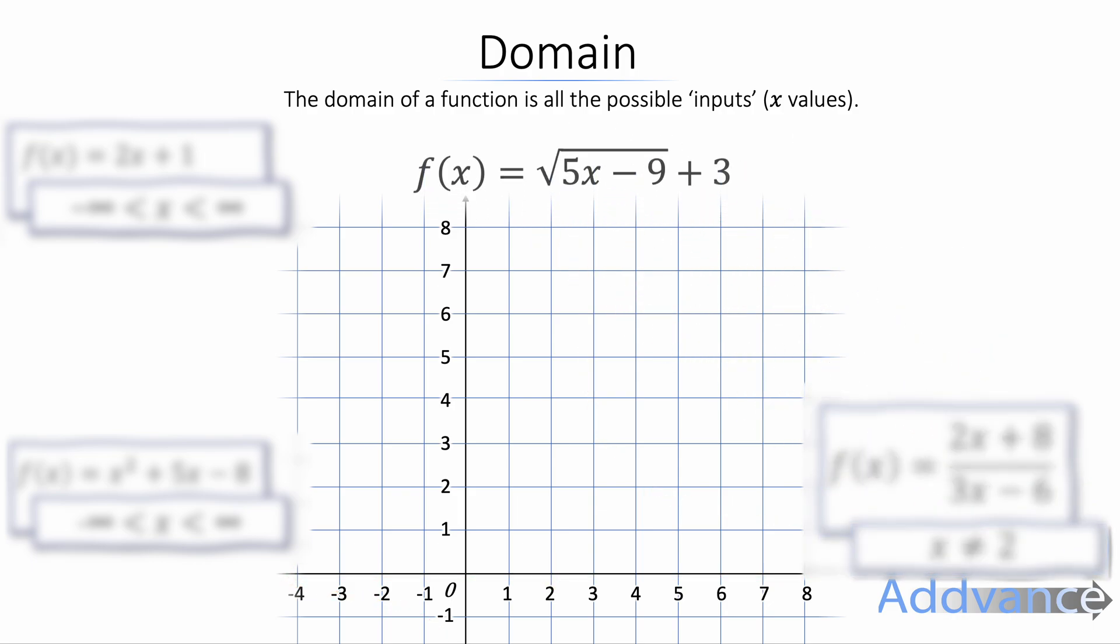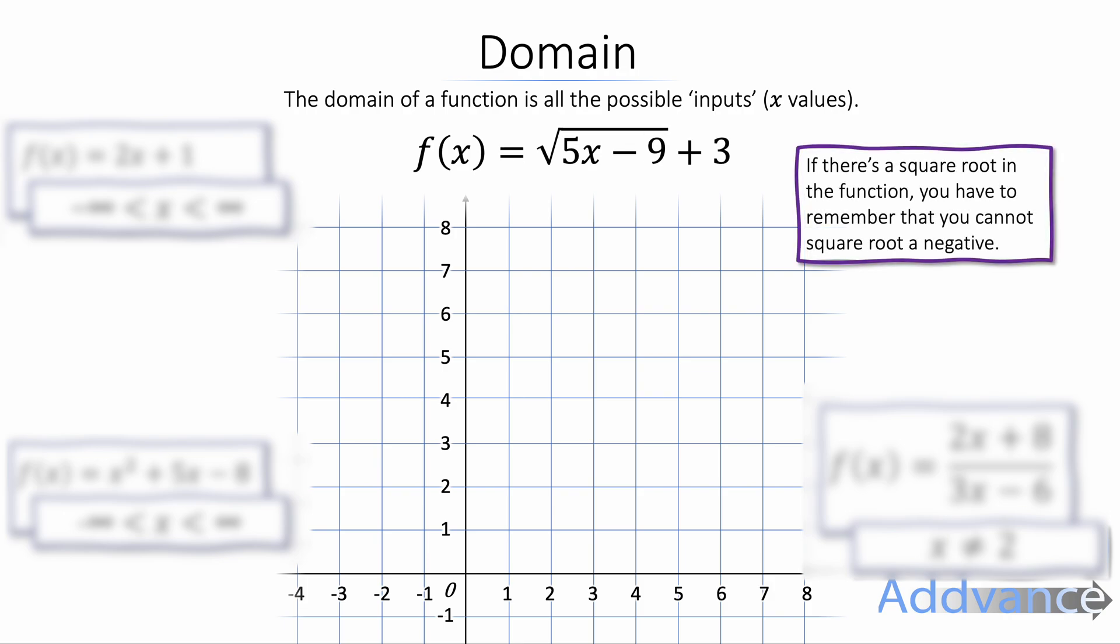Finally, we can look at functions where we've got a square root. And all you have to remember here is that you can never square root a negative number. So 5x minus 9 is inside the square root. And you can't square root a negative, so this part can't be negative. It must be more than or equal to 0 or positive.